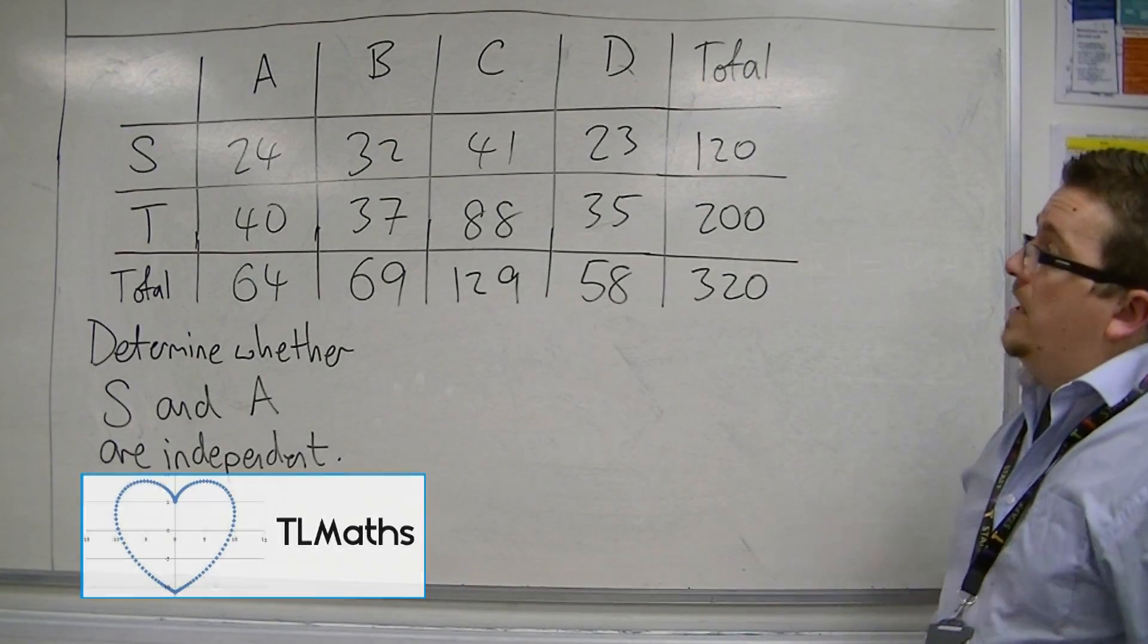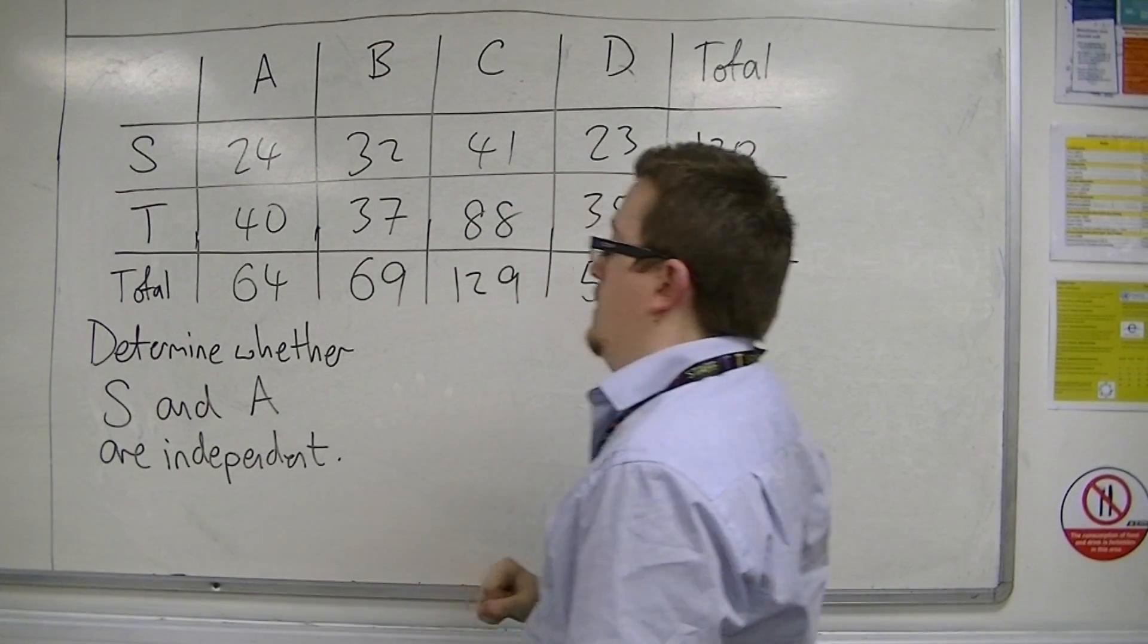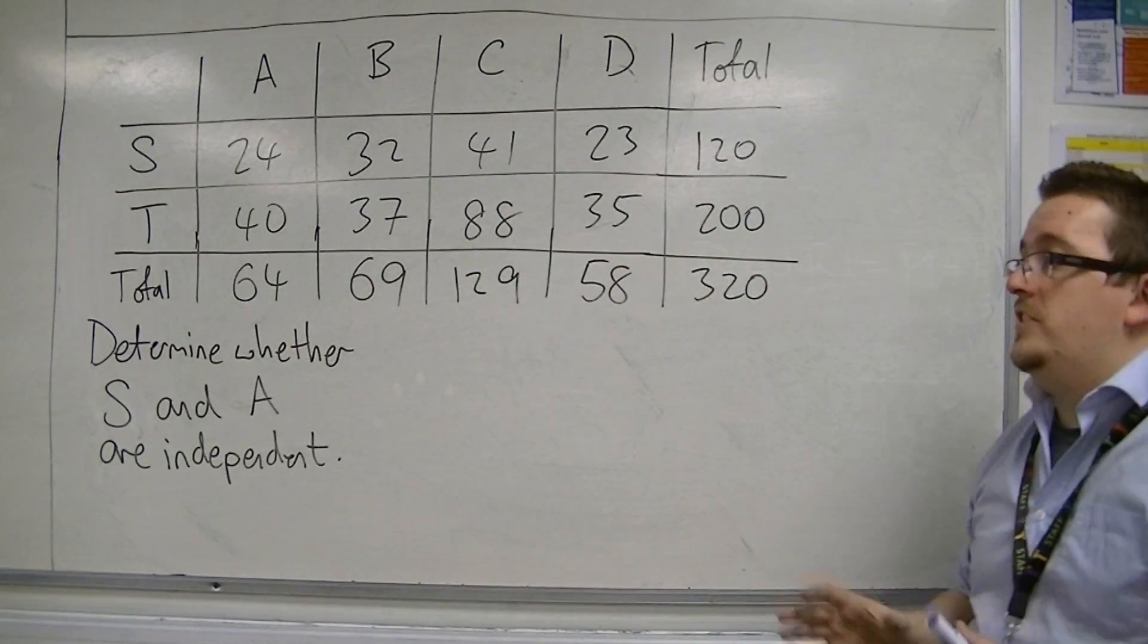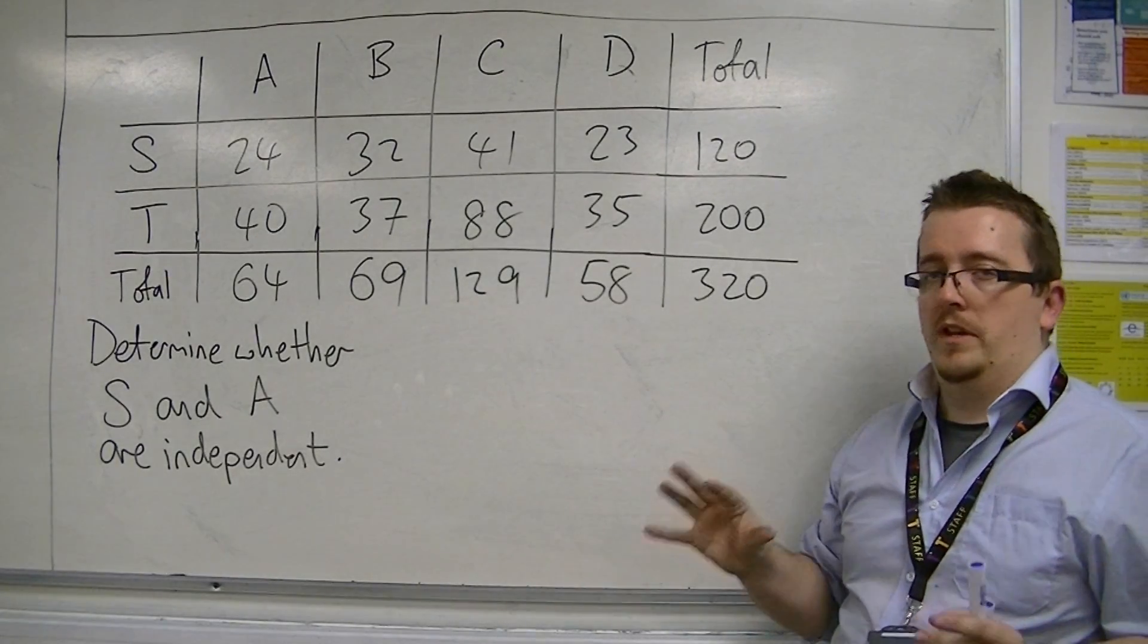Let's say we've got this table of events A, B, C, D, and S and T. What we want to do is determine whether the events S and A are independent of one another.